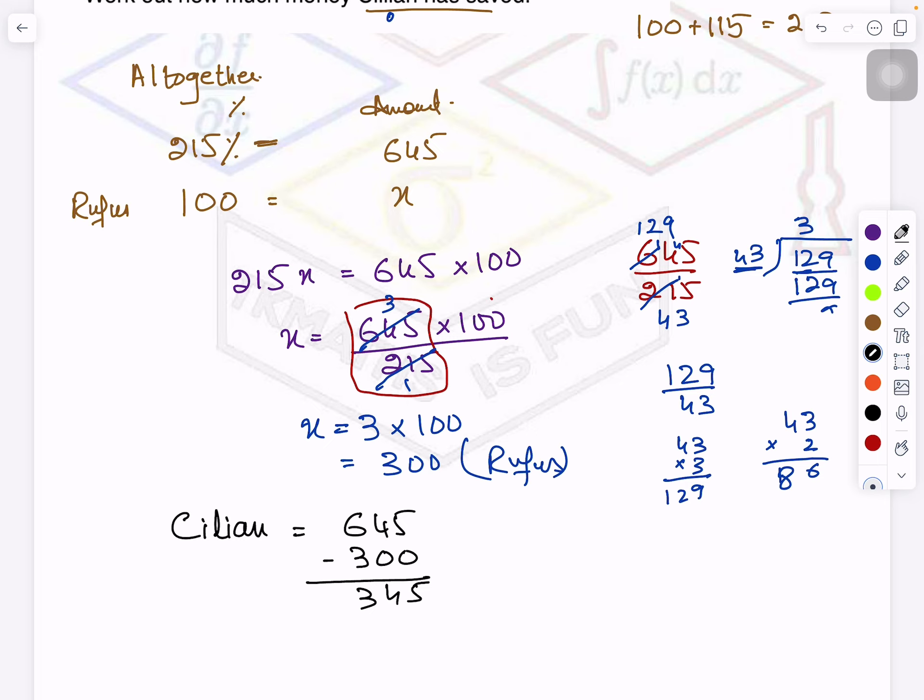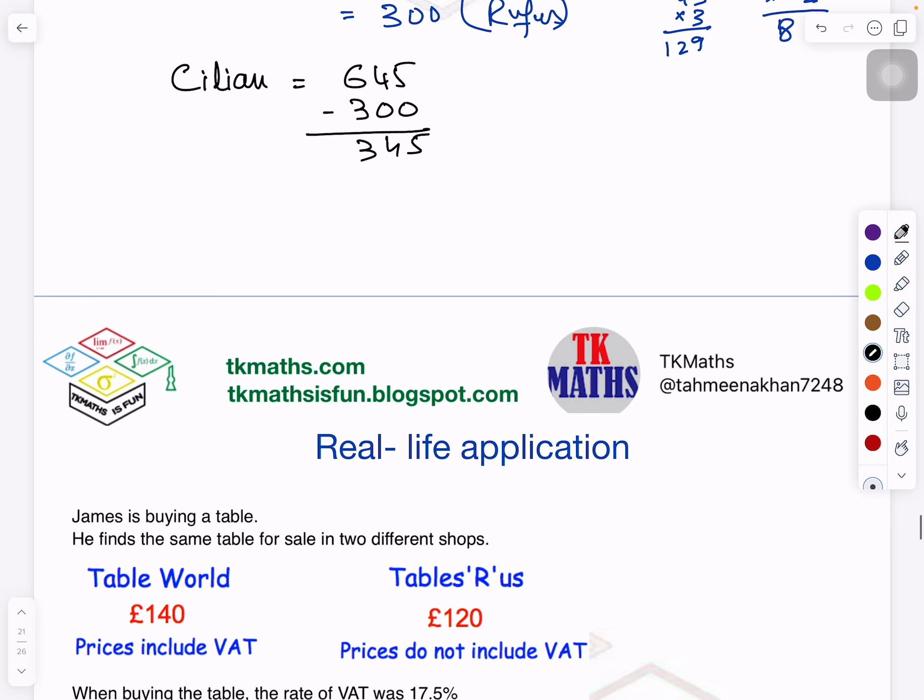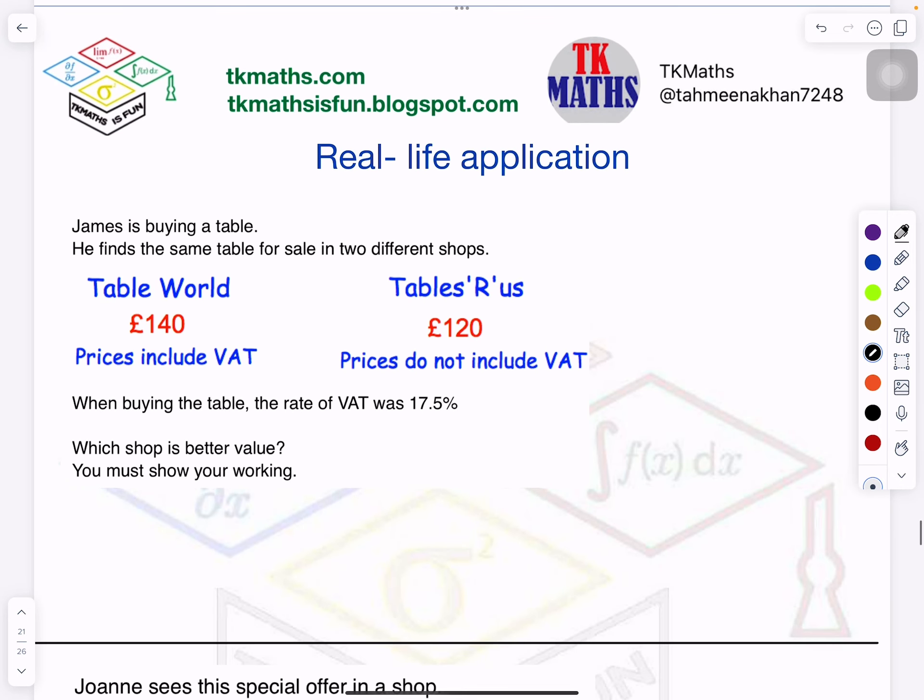Right, now this question: James is buying a table. So you know when we go to shop, different sales offers are there, so we see which is suitable, which is more cheaper and with good quality. So here two different shops' prices are given to you. Table World is a shop. They are saying they are selling something at £140, VAT included. You know what is VAT? It's like a tax - value added tax. So in this shop that tax is already included in it, so you just have to pay 140 and you get the table.